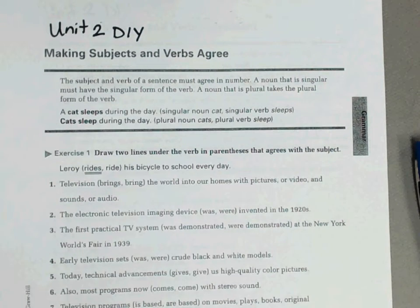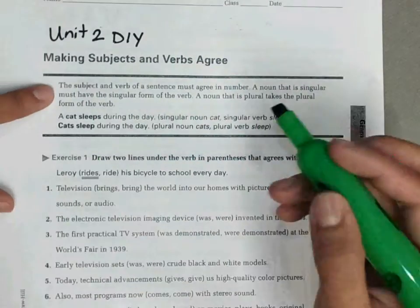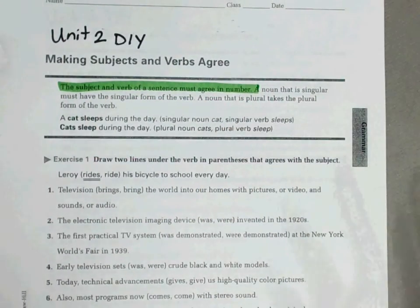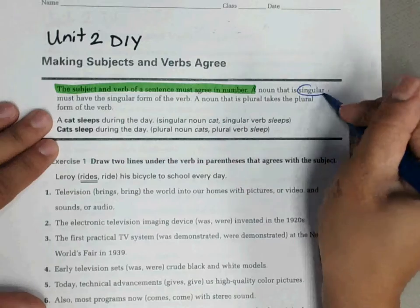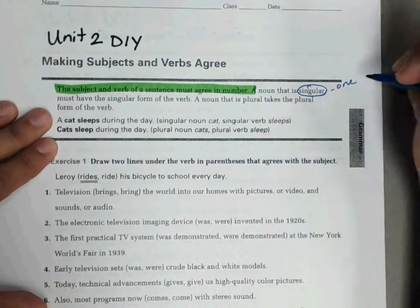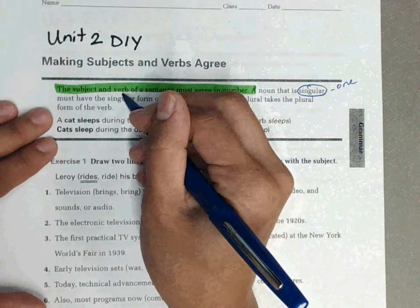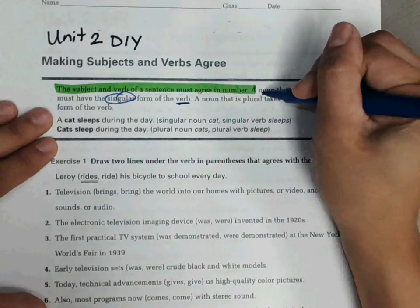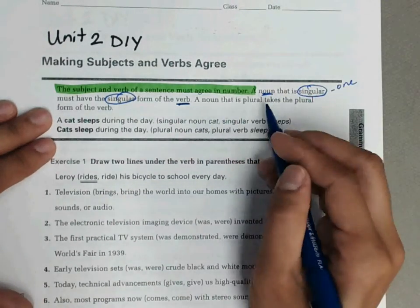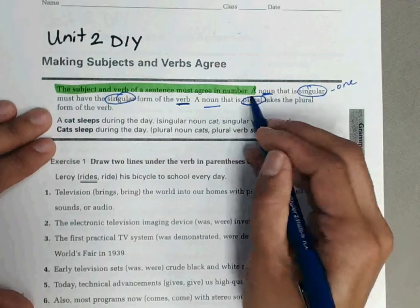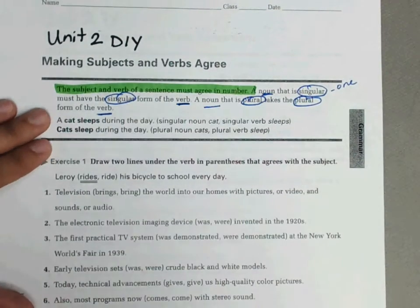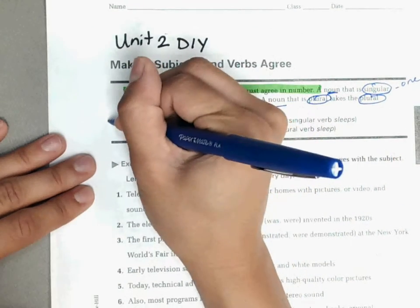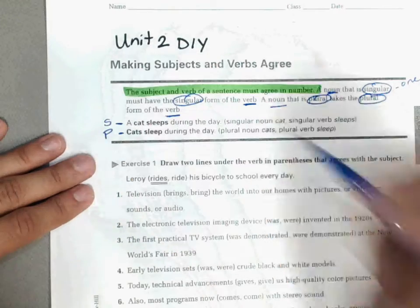So let's start at the beginning. It says the subject and verb of the sentence must agree in number. That means a noun that is singular, meaning one, must have the singular form for the verb. A noun that is plural takes the plural form of the verb. So our example is right here — we have an example of a singular and an example of a plural.